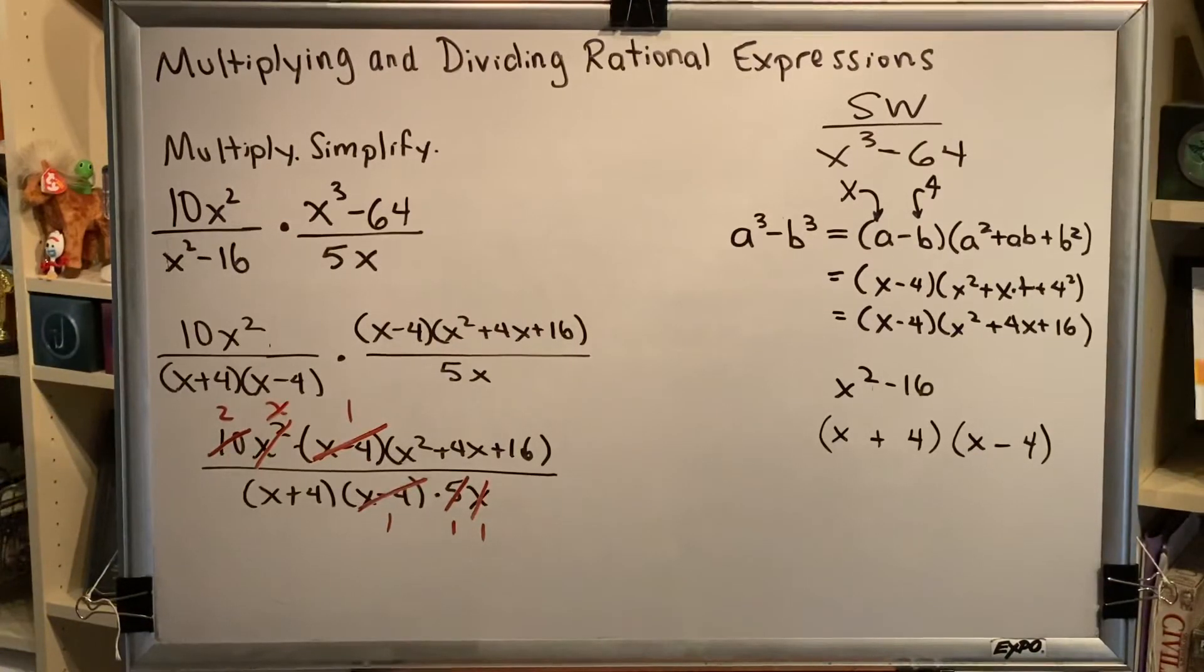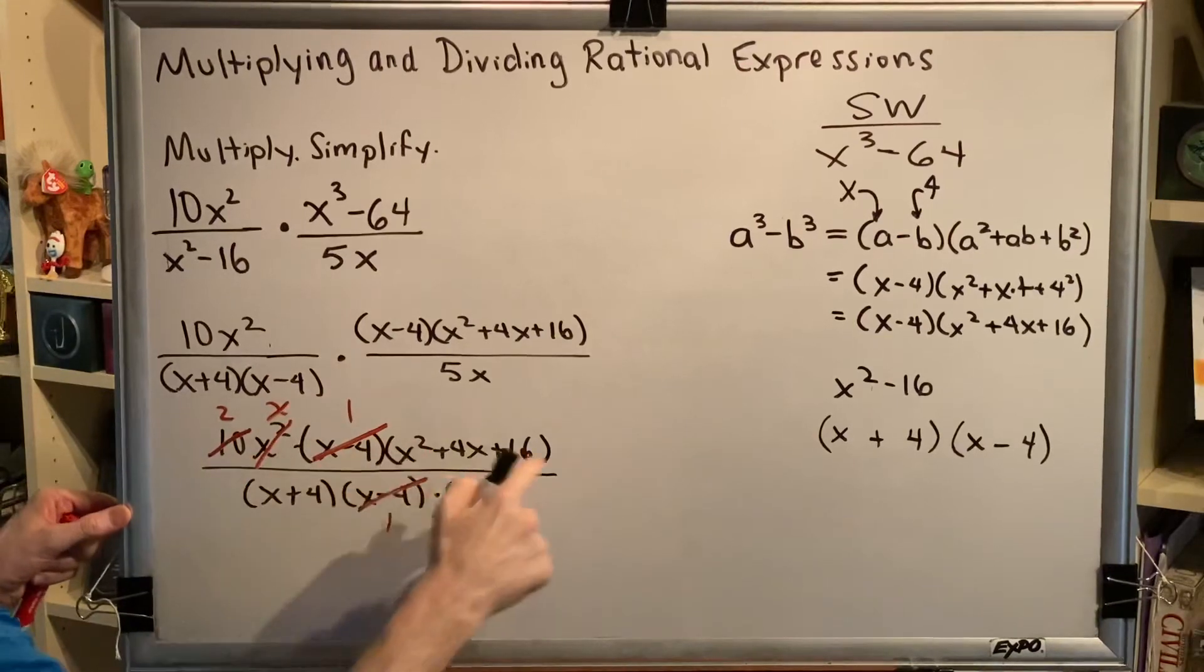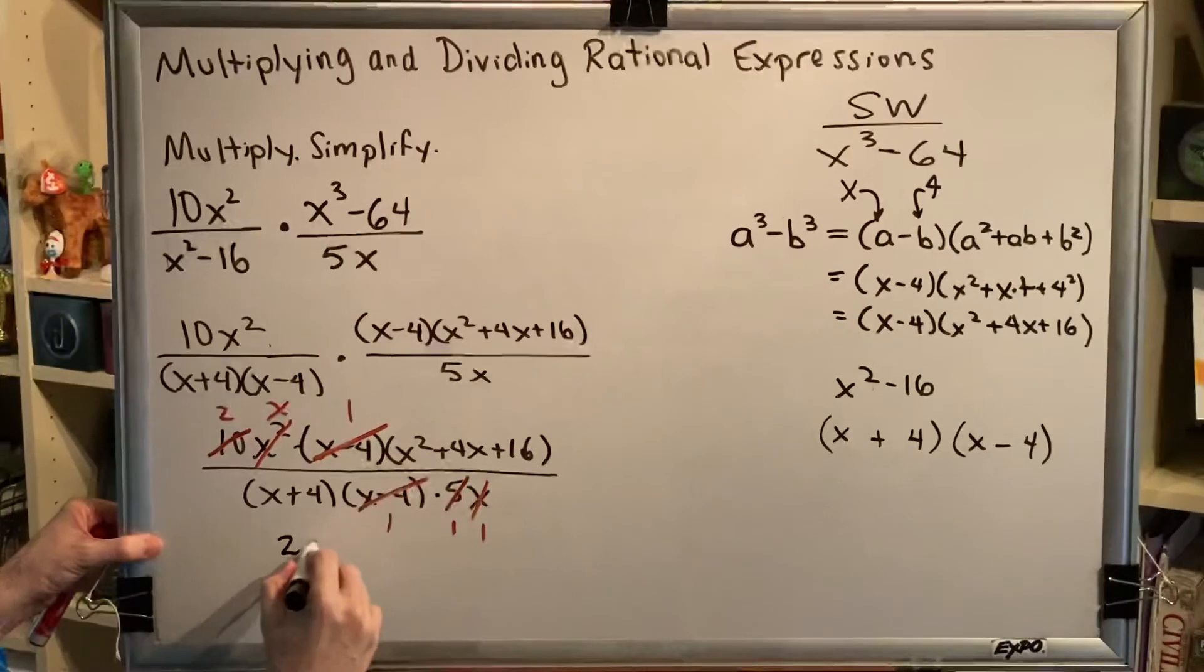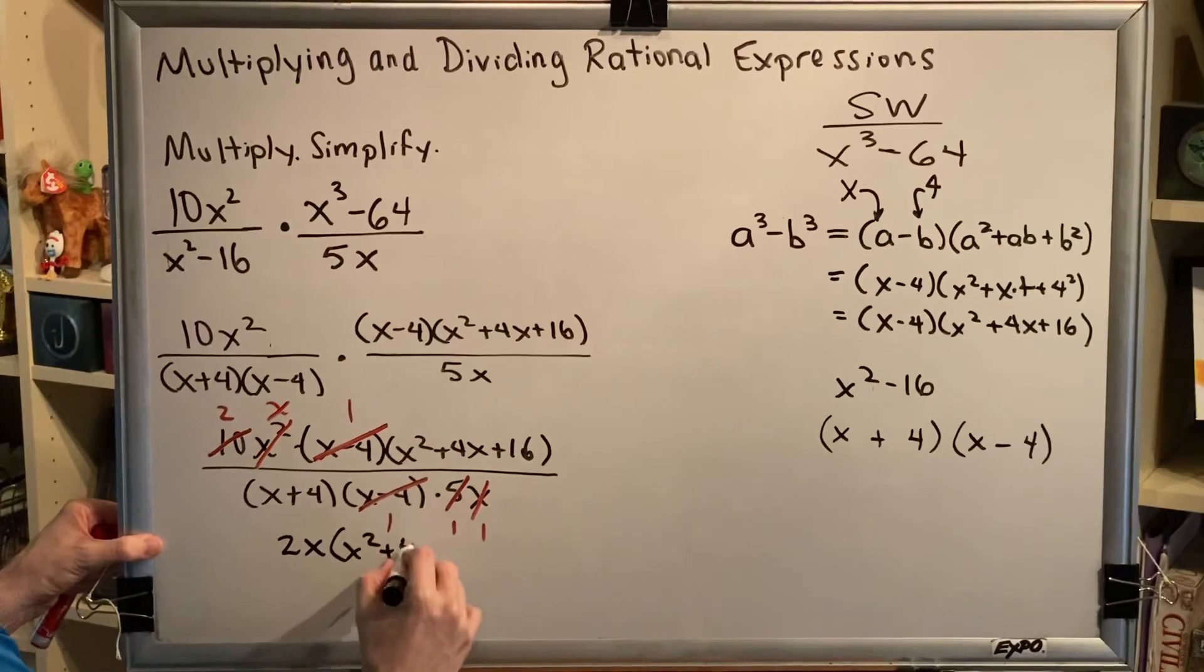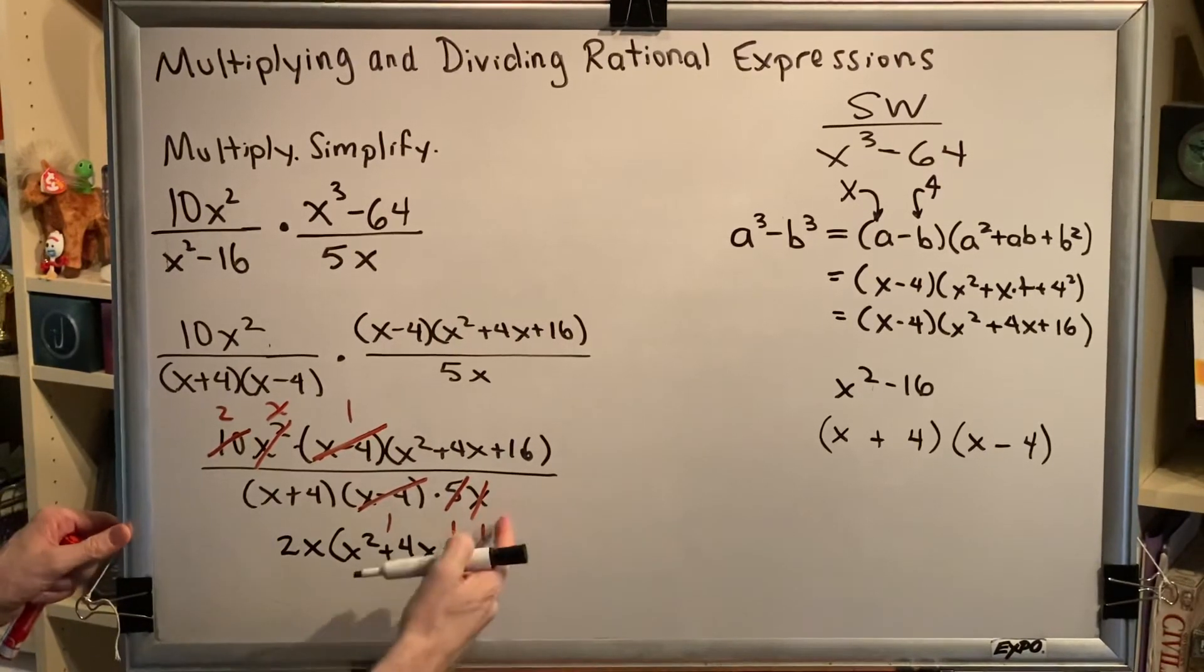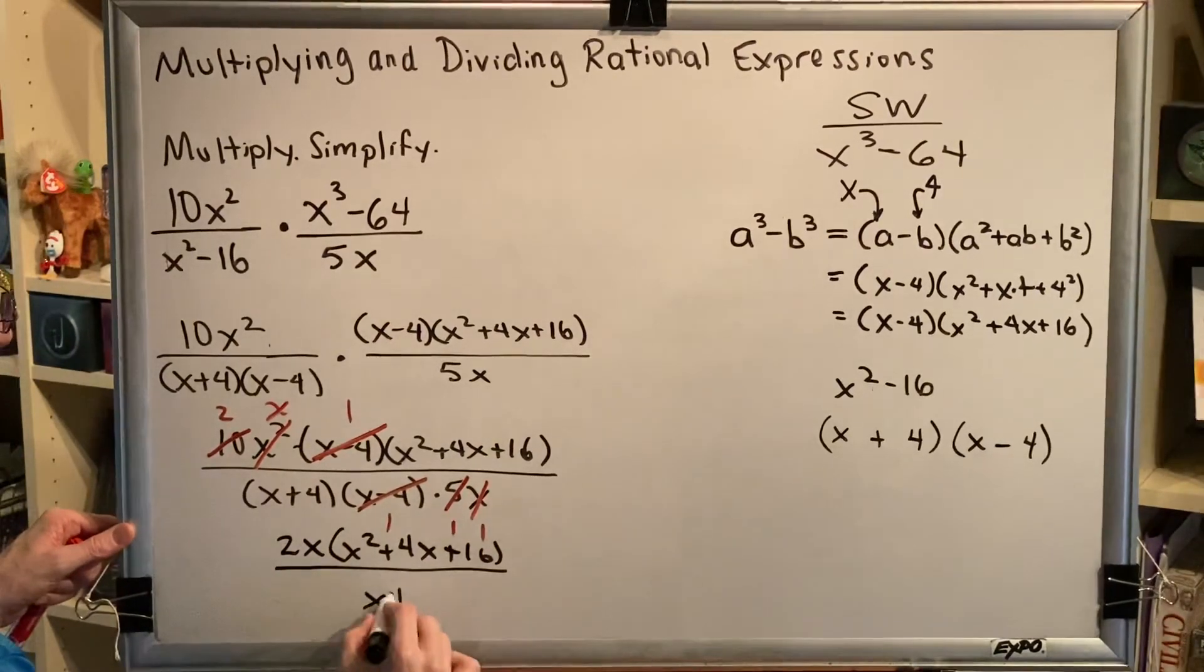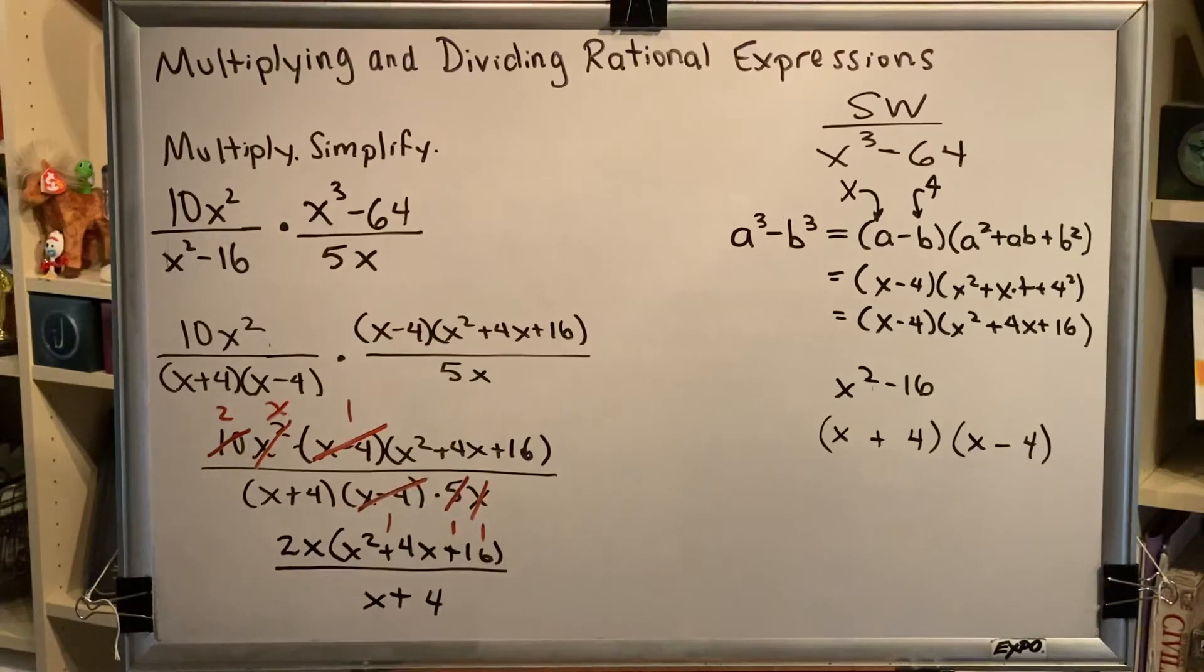Now we're ready to put it all back together again. So we have 2 times x times the trinomial. That would be 2x(x²+4x+16). And in the bottom, we have x+4.